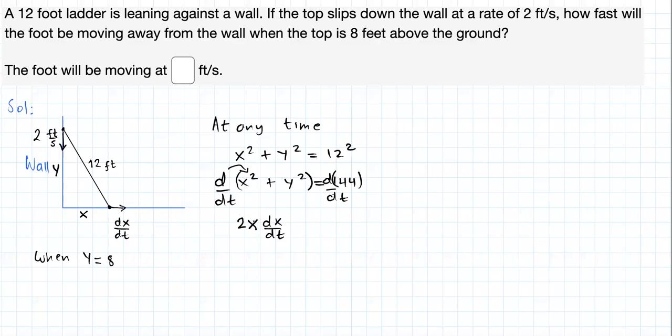And because of the chain rule, this is the derivative of the outside function x square, and that must be multiplied by the derivative of the inside function x, which is a function of time.